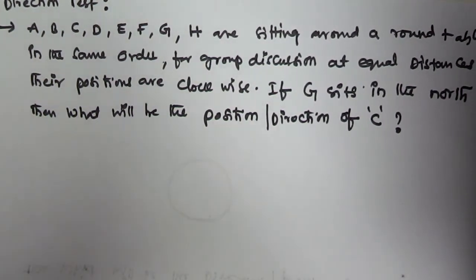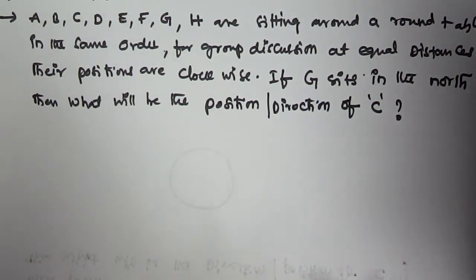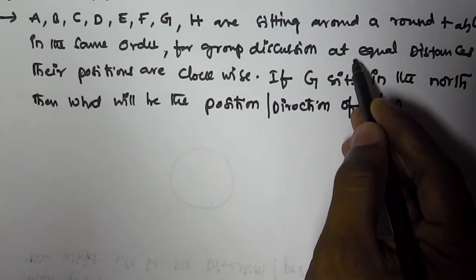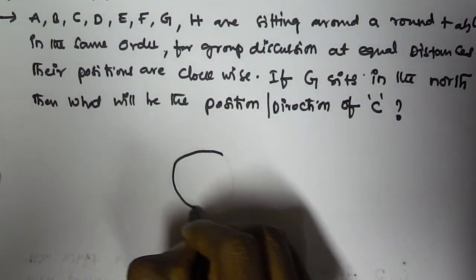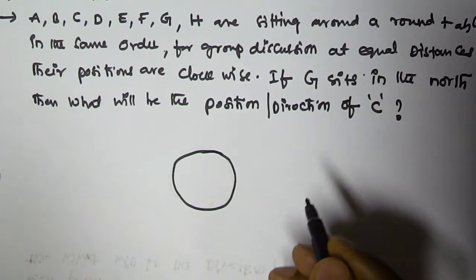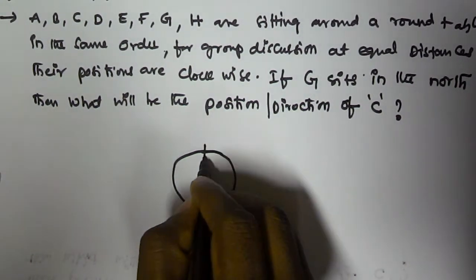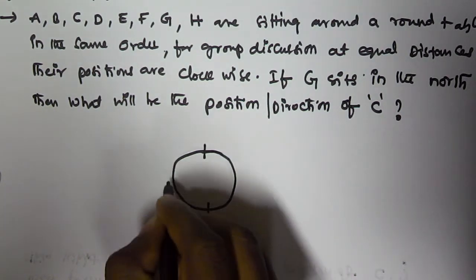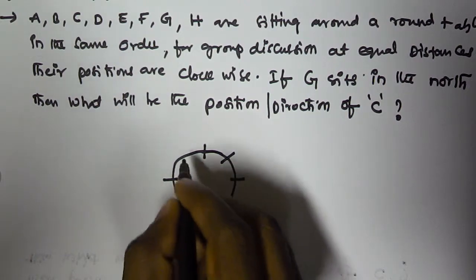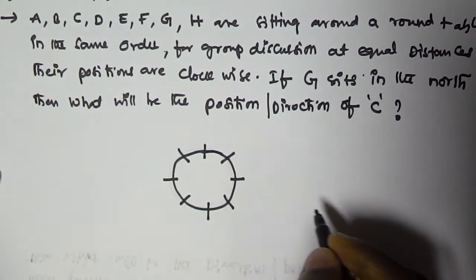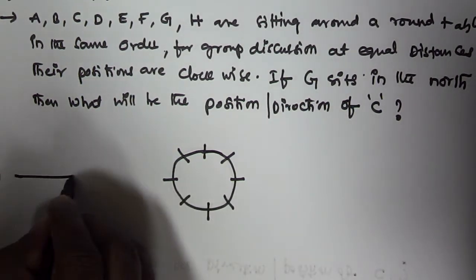There are 8 people sitting around a round table. In the same order for group discussion, they sit at equal distances. So let us consider this is our round table. I am taking 8 people at equal distances — 4, 6, 7, 8 people sitting at equal distances.